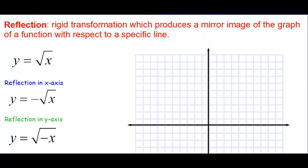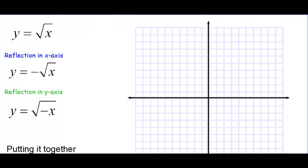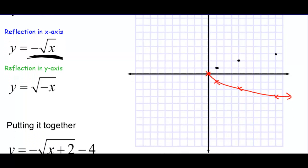How about y equals the square root of x? Let's start with that parent function. We have square root of 0 is 0, square root of 1 is 1, square root of 4 is 2, and square root of 9 is 3. Reflect in the x-axis: if you multiply the outside of a function by a negative, that reflects over the x-axis. If you multiply the inside of a function by a negative, that reflects over the y-axis.